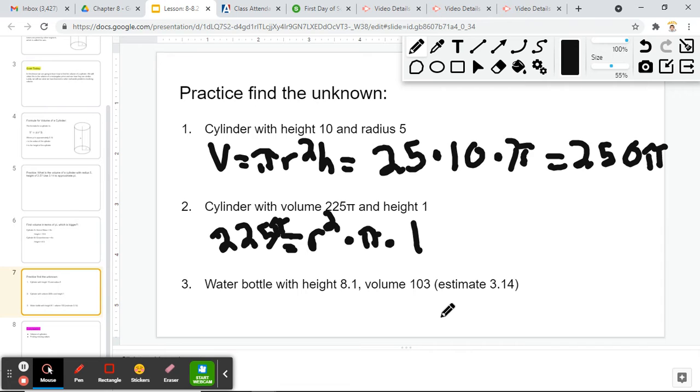If you do some division here to cancel, the π's are going to cancel out, and then we have 225 equals 1 times r squared. Well, that's just r squared. That means we need to find the square root of 225, which I'll do on my calculator right now, and that would be 15.